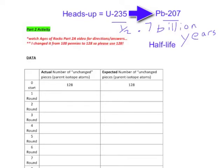The pennies that are heads-up represent Uranium-235. U is the symbol for uranium; 235 is the atomic number of this isotope — protons and neutrons. Pb is the symbol for lead; 207 is the number of protons and neutrons.